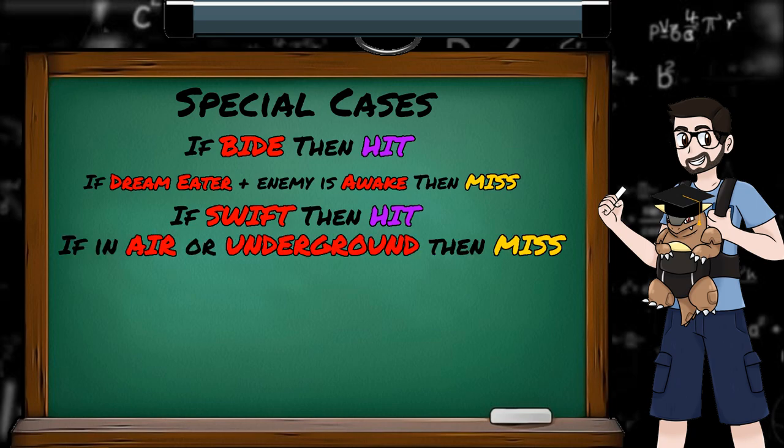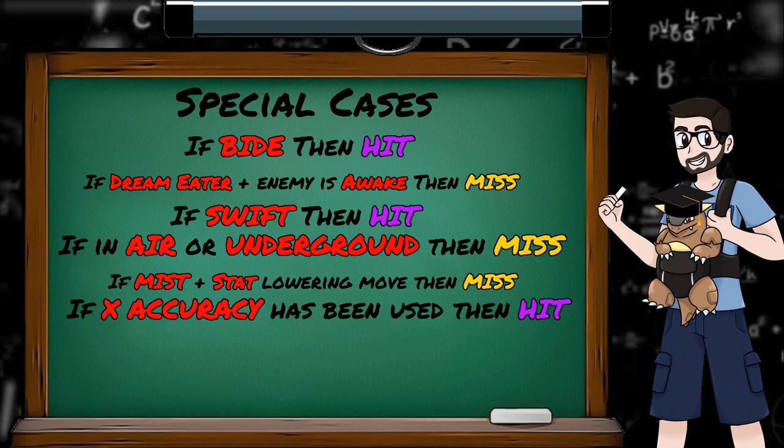Our next check is if the enemy is in the air or underground, in which case, if you aren't using Swift, you miss. Is the move Mist in play, in which case, any stat-lowering moves you use will miss? Has X-accuracy been used, and if so, hit? So even the X-accuracy exploit is immune to the 1 in 256 glitch.